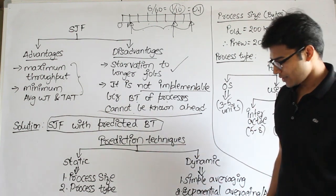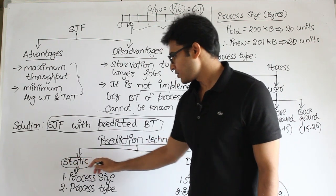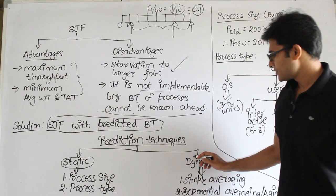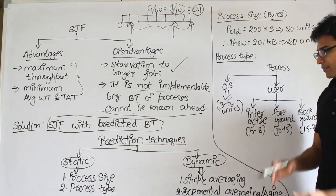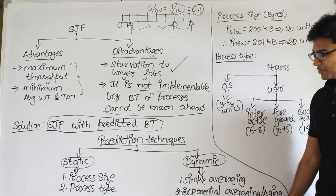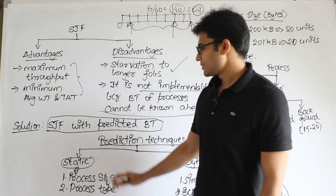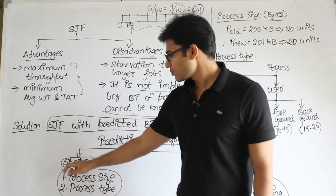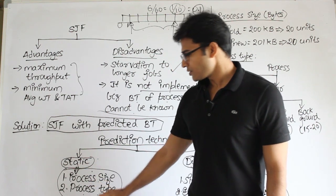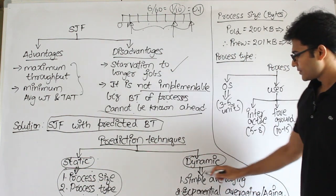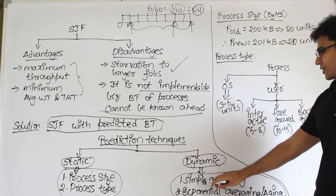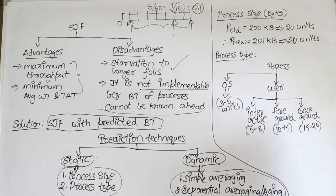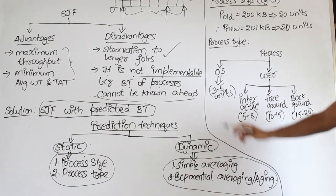There are two ways to predict burst times. One is static — once you fix it, it stays that way. The other is dynamic — it continuously keeps changing while you perform the schedule. Static prediction is based on either process size or process type. Dynamic prediction uses either simple averaging or exponential averaging, also called aging.